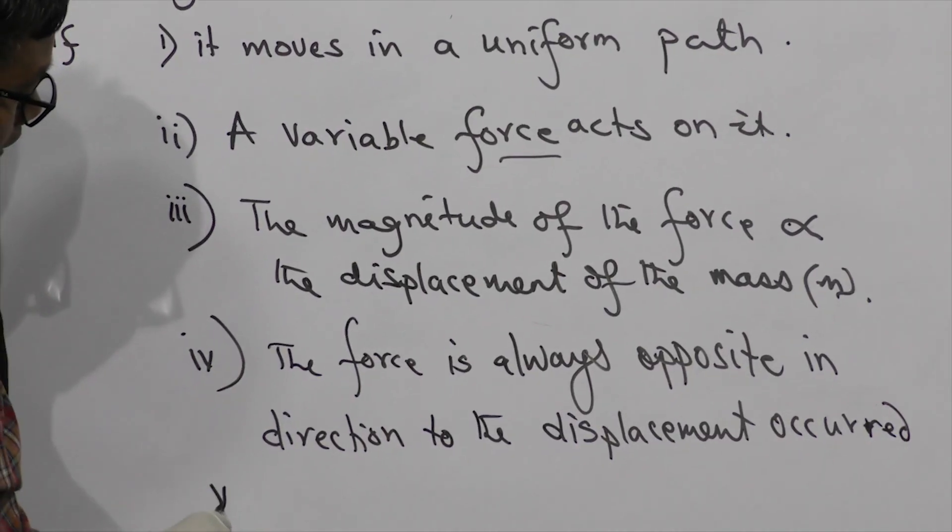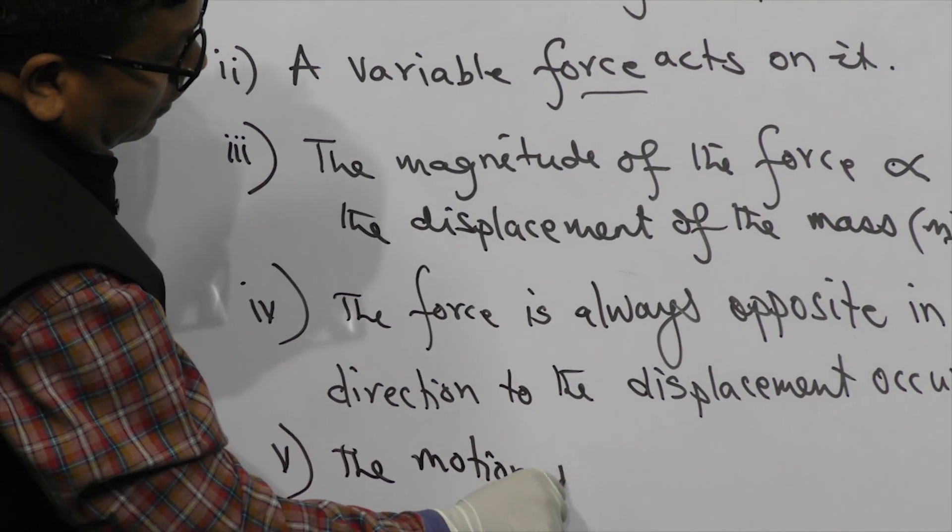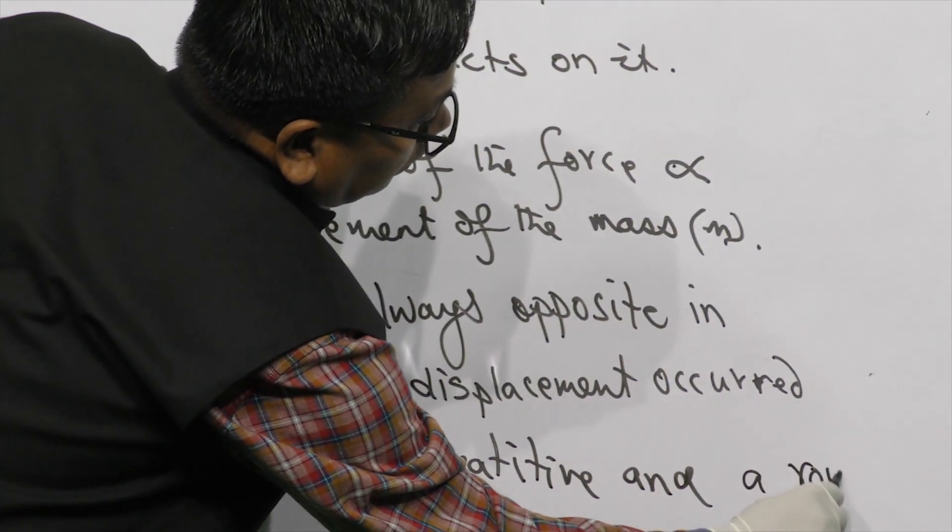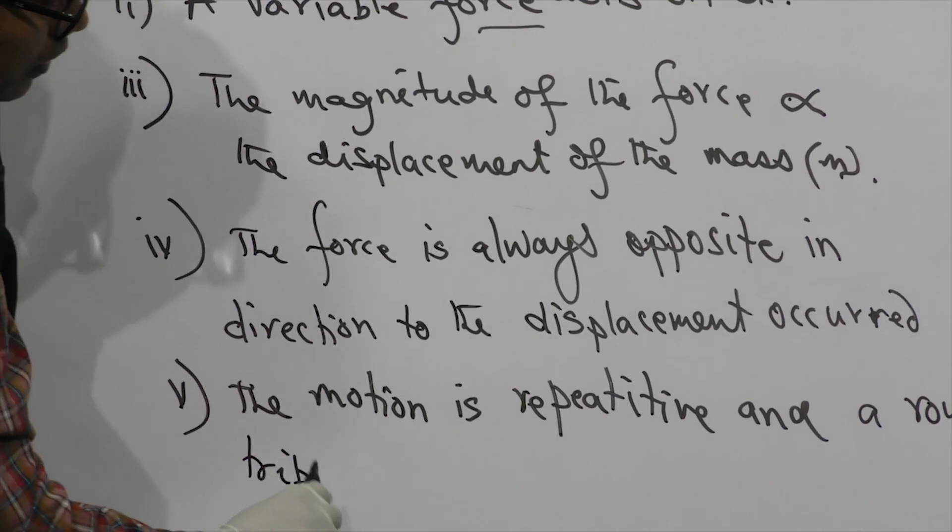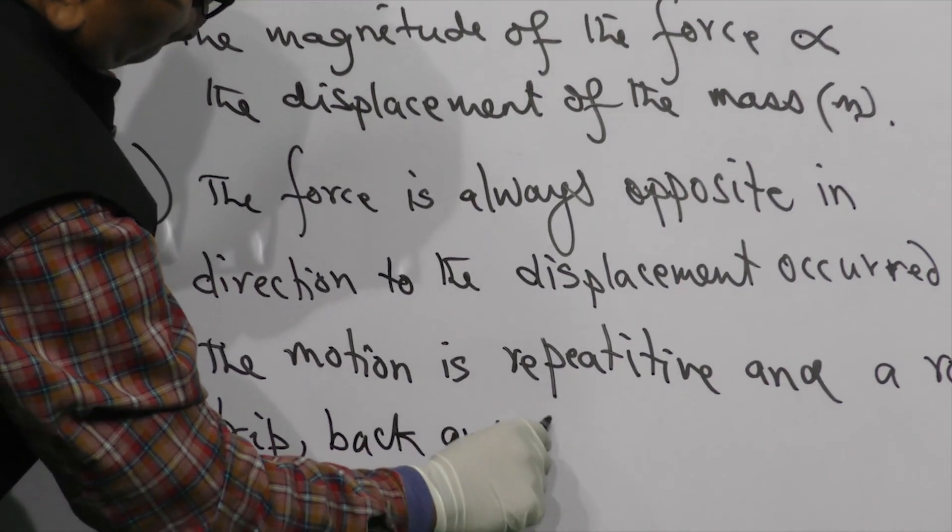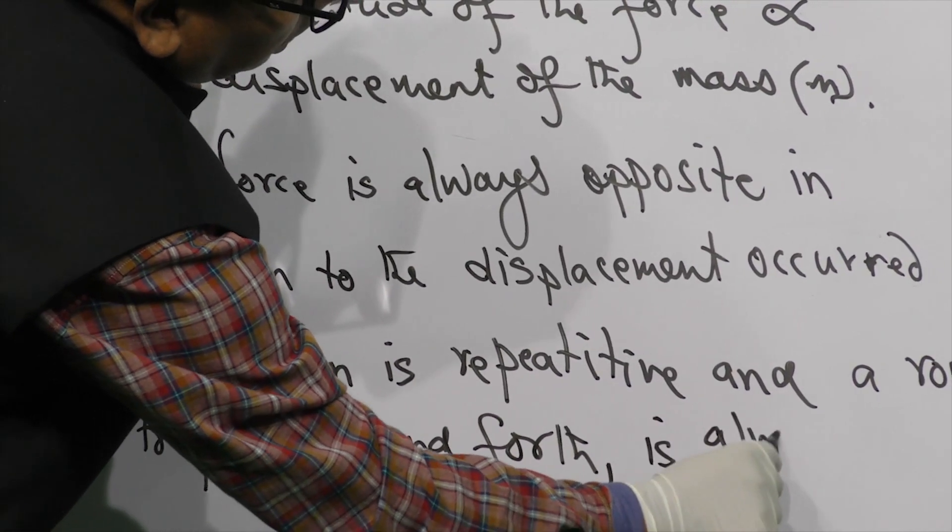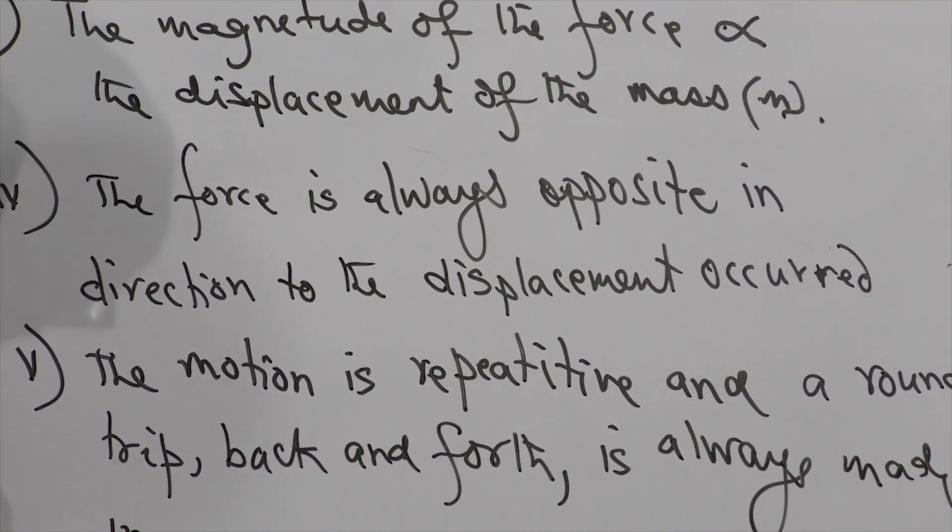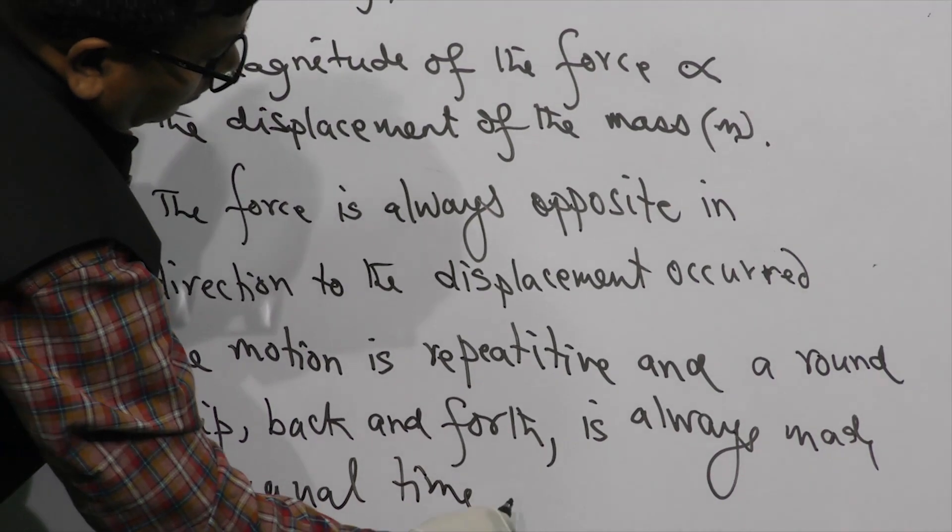And last one is, number five, the motion is normally repetitive, or continuous round-trip, back and forth, and is always made in equal time periods.